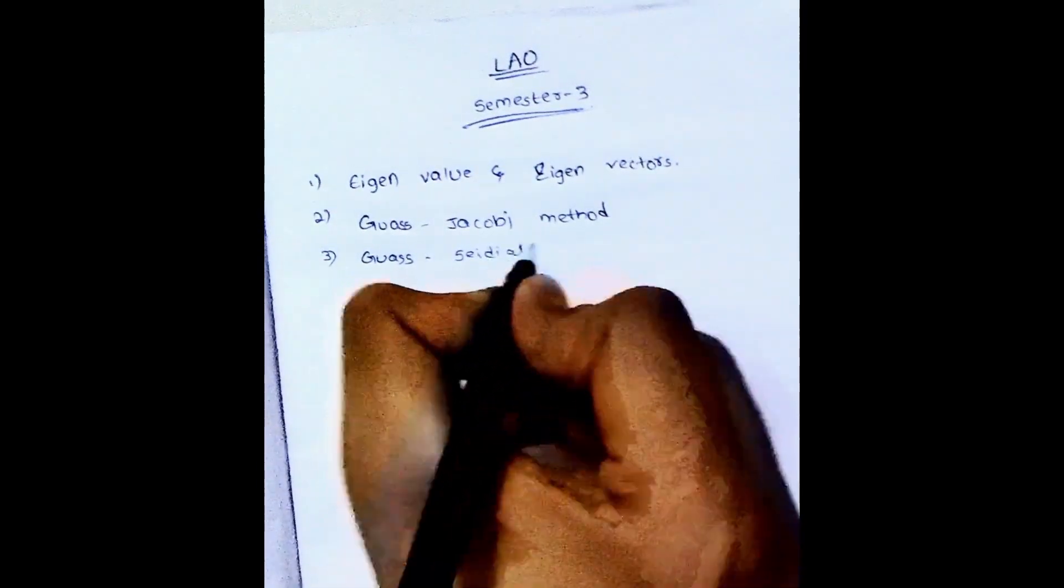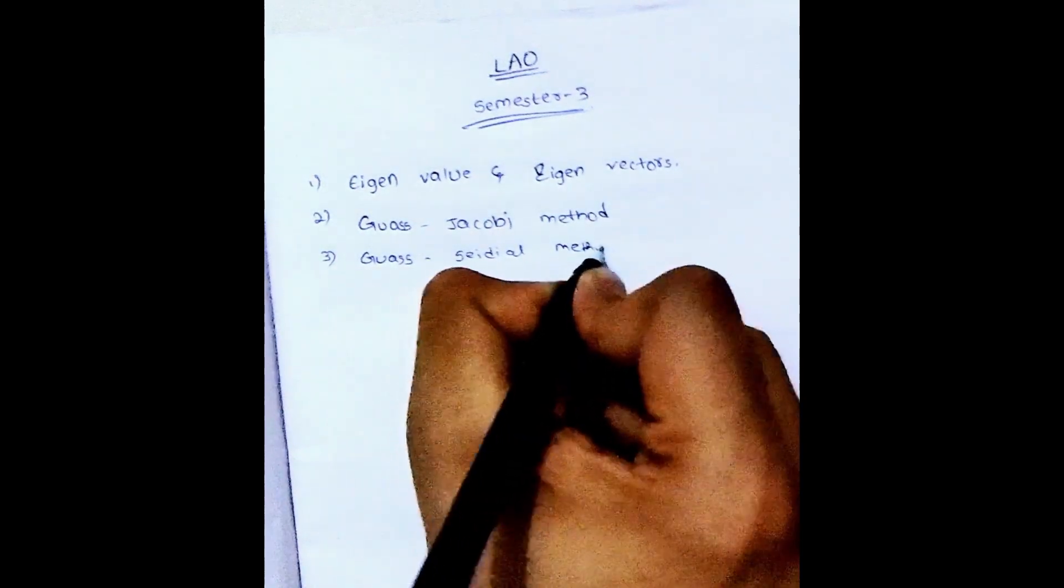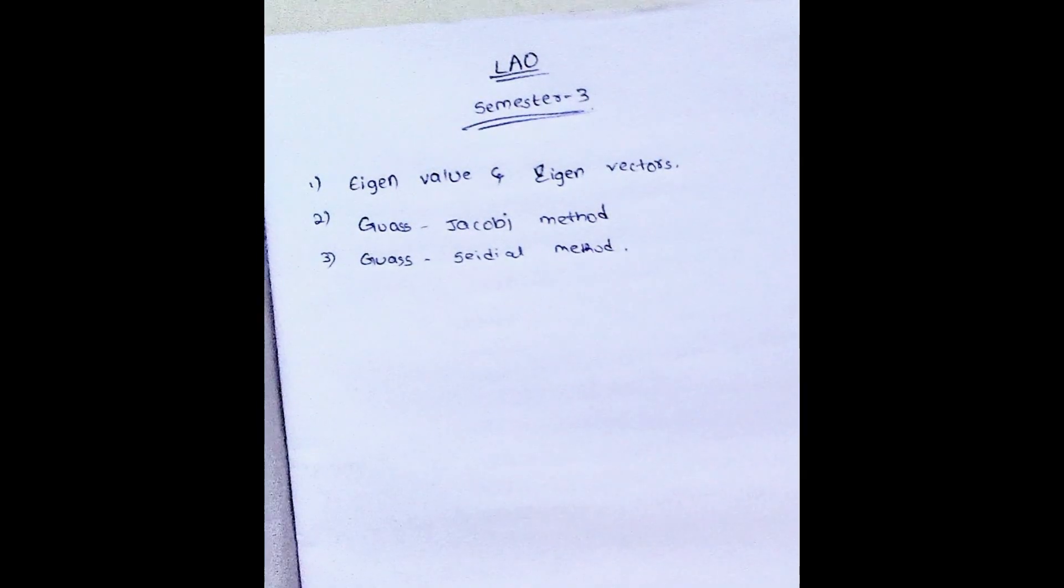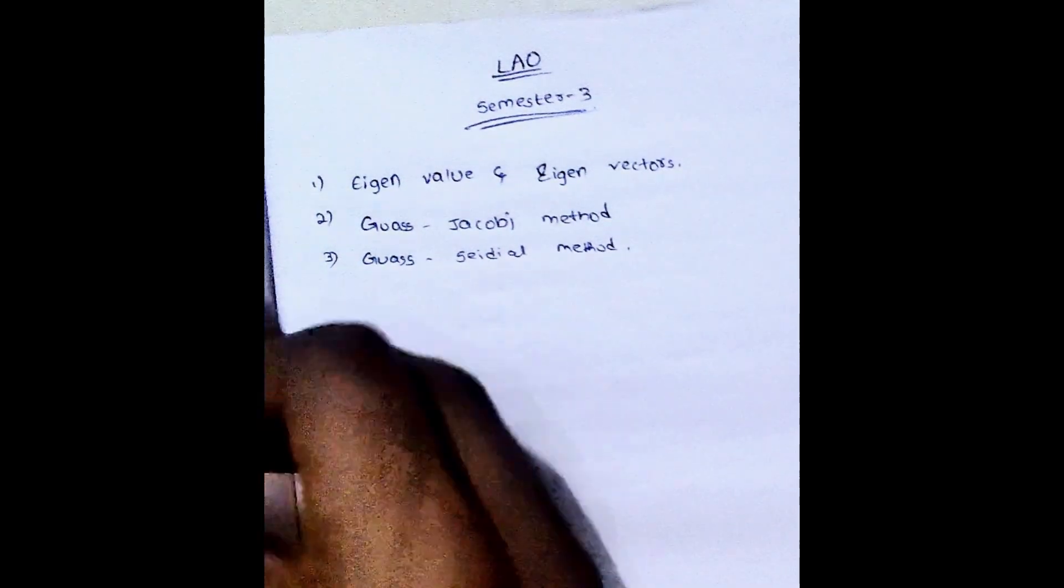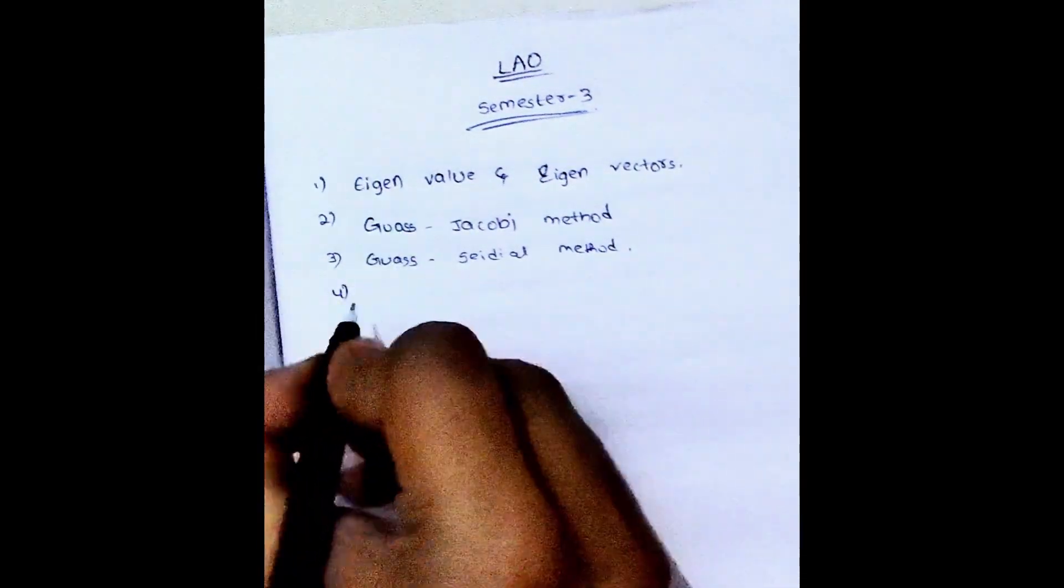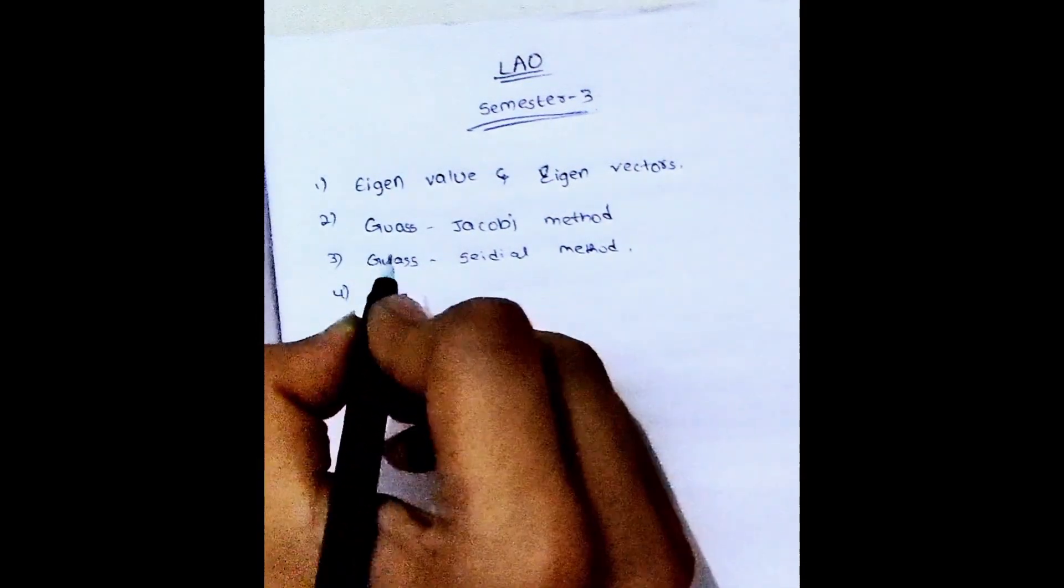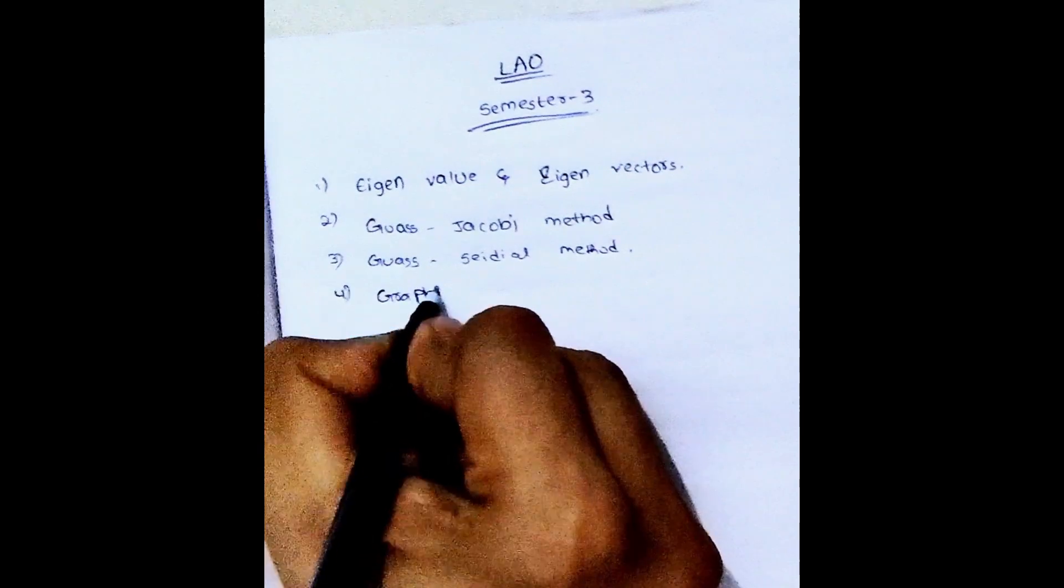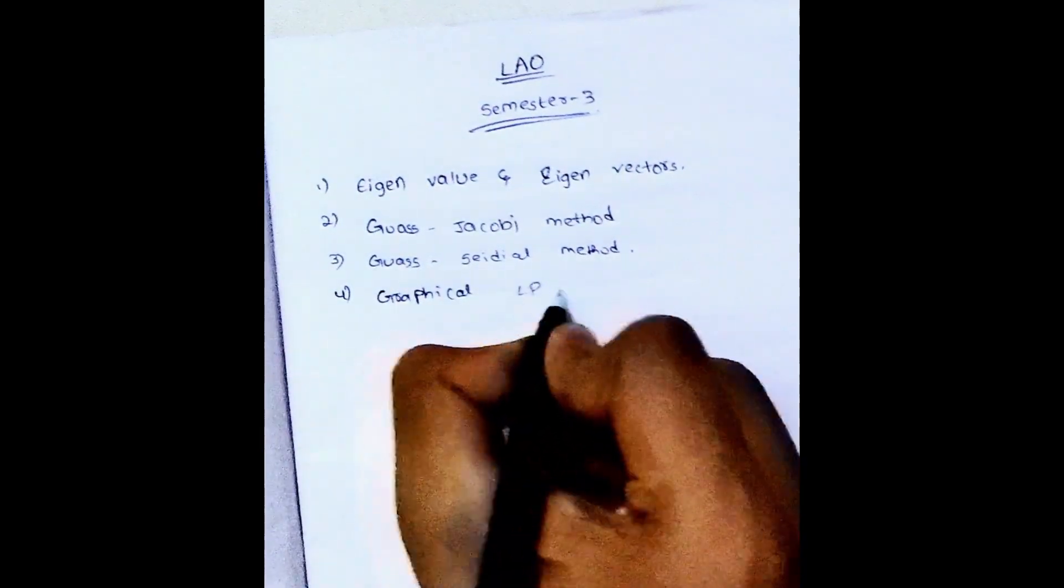If you get to know what is Gauss-Jacobi method, then it is easy to answer Gauss-Jacobi method. After completing this, we are going to solve graphical LP model. Like we can say two variable LP model. LP means linear programming model.